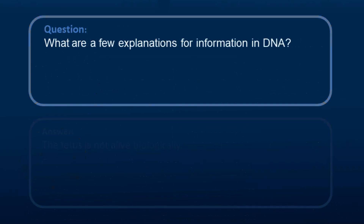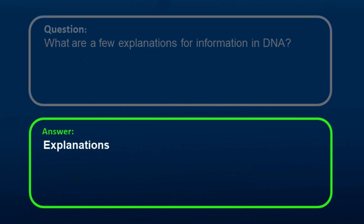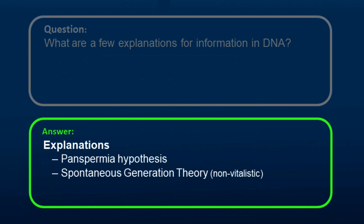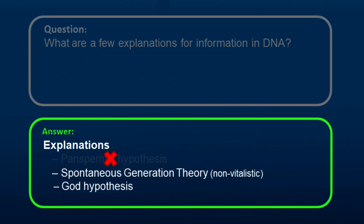Question: What are a few proposed explanations for the information in DNA? A few explanations include: 1. The panspermia hypothesis, 2. Spontaneous generation theory, and 3. The God hypothesis. The panspermia hypothesis turned out to be inadequate and the spontaneous generation theory turned out to be inadequate. By process of elimination, only the God hypothesis remains.